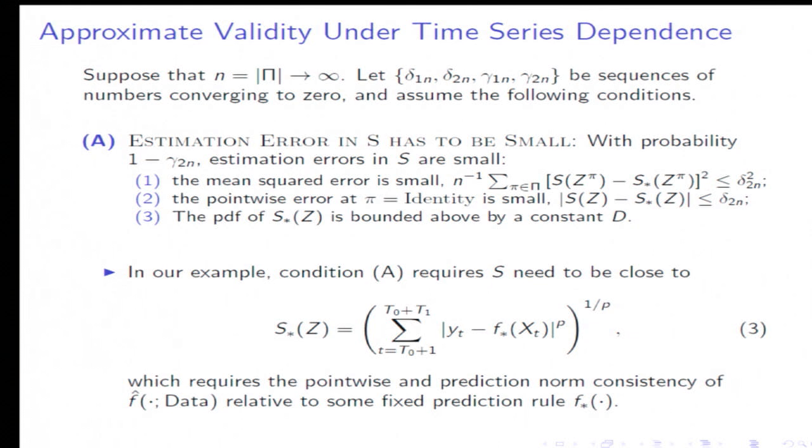Then we get to the main result of the paper, which is the approximate validity under time series dependence. Here we're going to rely on two conditions. The first condition is A. This condition will say that we work with this statistic S, but this statistic S needs to be close to another statistic S star, which does not contain a hat here.